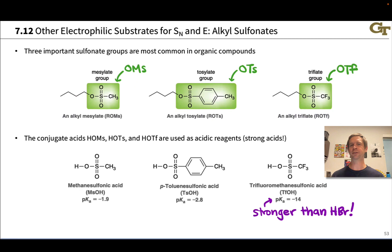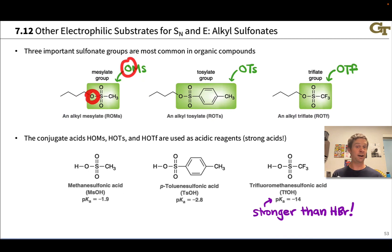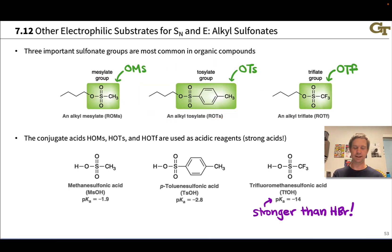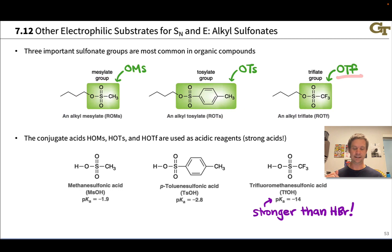The three most important sulfonate groups in organic compounds are: the methanesulfonate or mesylate group, abbreviated OMs; the toluenesulfonyl or tosylate group, abbreviated OTs, which is the most commonly used; and the triflate group, in which the R group is CF3, abbreviated OTf. So we have an alkyl mesylate, alkyl tosylate, and alkyl triflate. Toluenesulfonate is typically abbreviated tosylate.